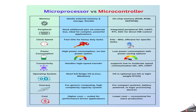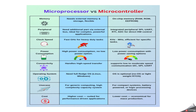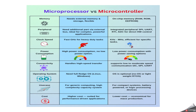Based on all these differences, how will you decide which one is suitable for your project — a microprocessor or a microcontroller? The choice depends on the specific application requirements, including processing power, system complexity, power consumption, cost, flexibility, and development considerations. Based on those factors, you can choose the right one for your project needs.